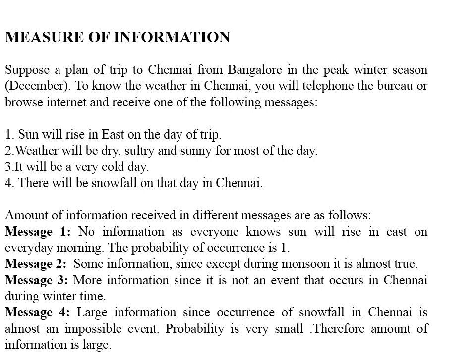So from this example, we can conclude that if the probability of occurrence is small, we are going to get large information. In other words, information is inversely proportional to probability of occurrence.